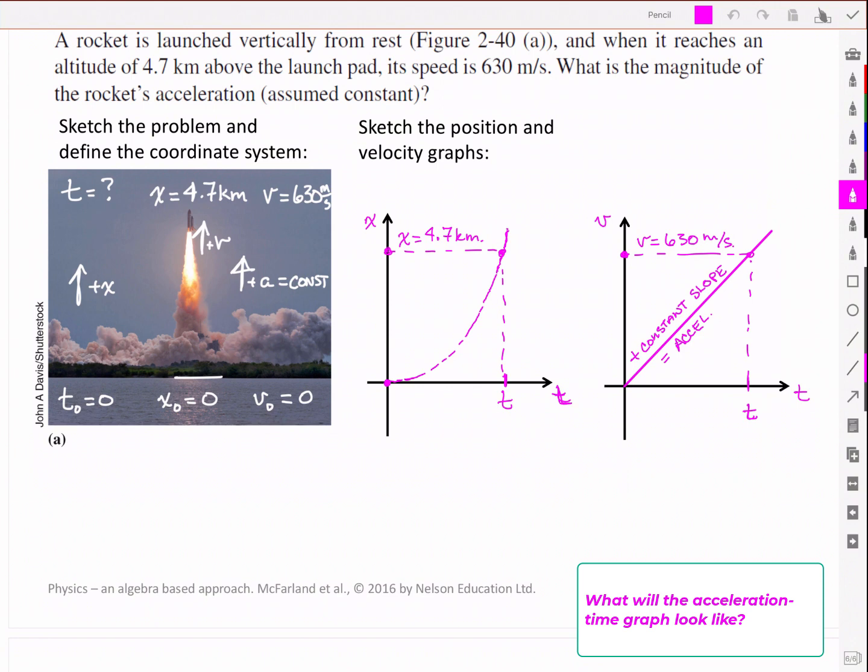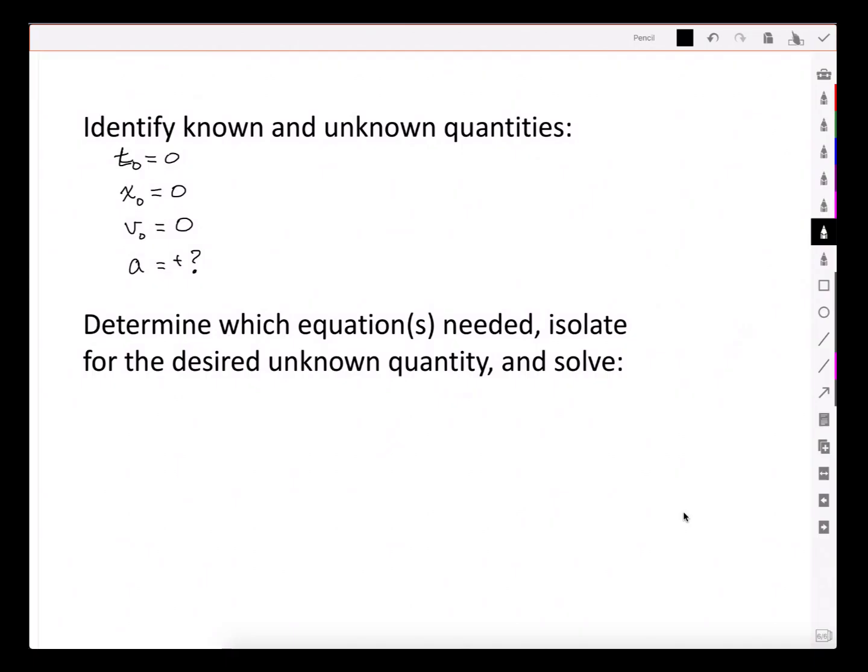Okay, let's work with that now. First we're going to identify the known and unknown quantities. We've done that partly on the figure already, but let's take inventory on the next page. We already said that at t not equal to zero, we saw that we had an initial position of zero, an initial velocity of zero, and we had an acceleration that was given to be positive but unknown.